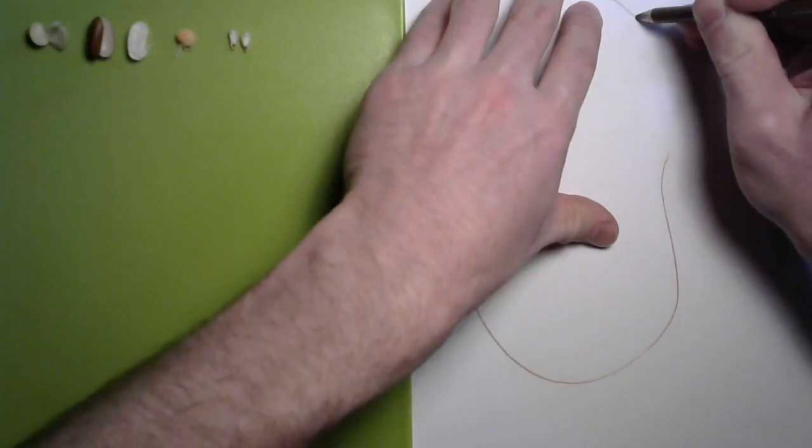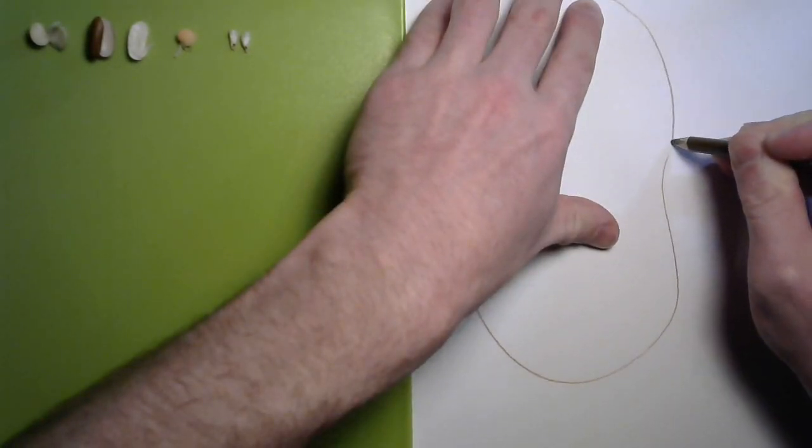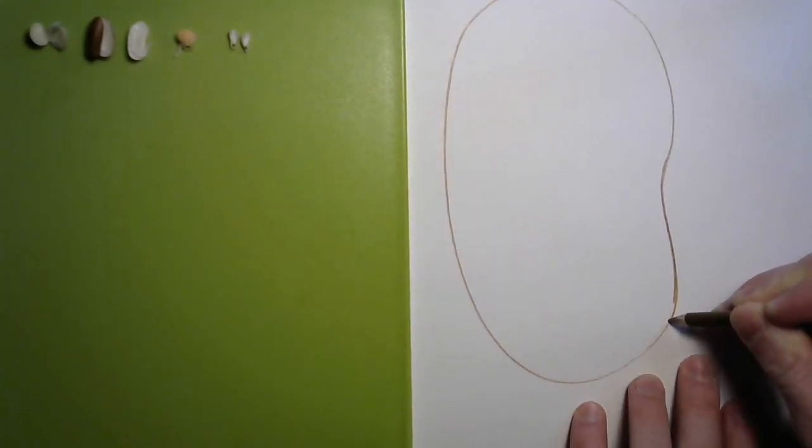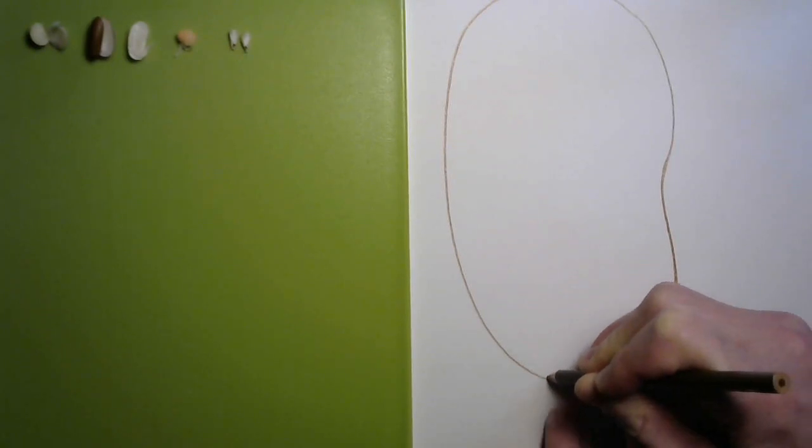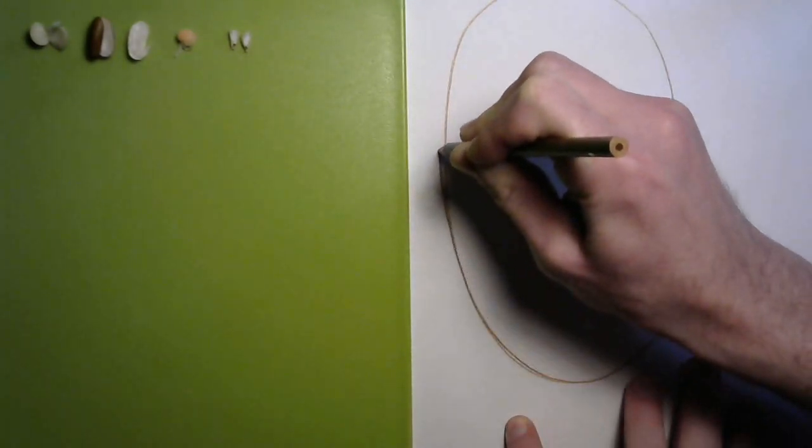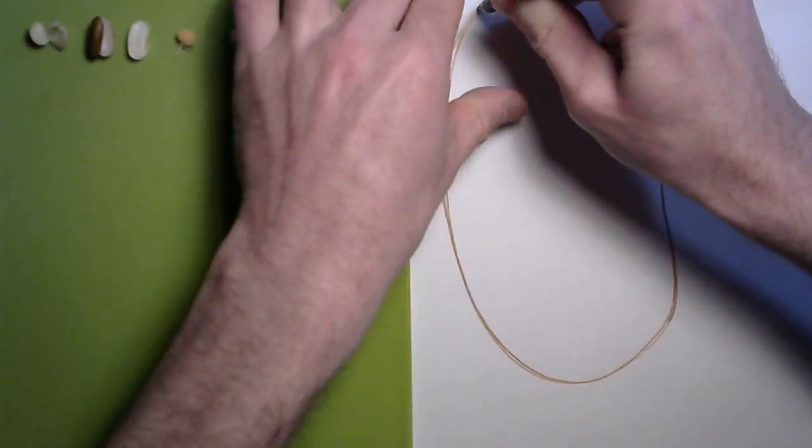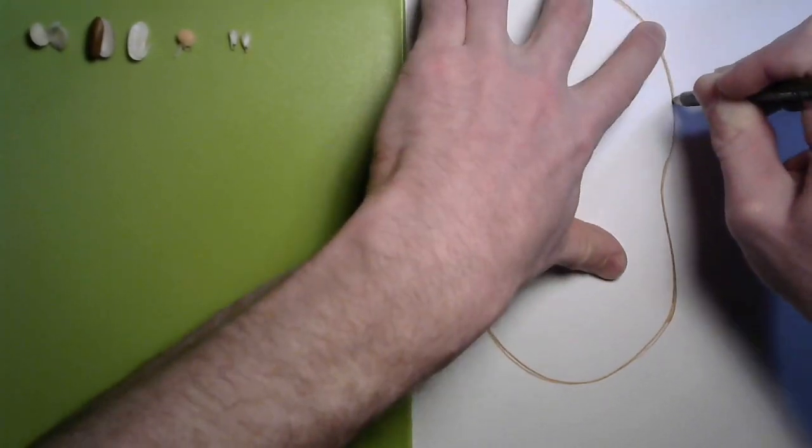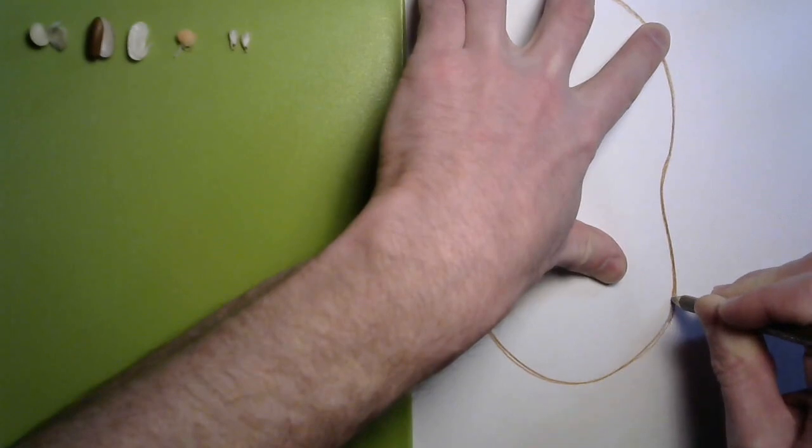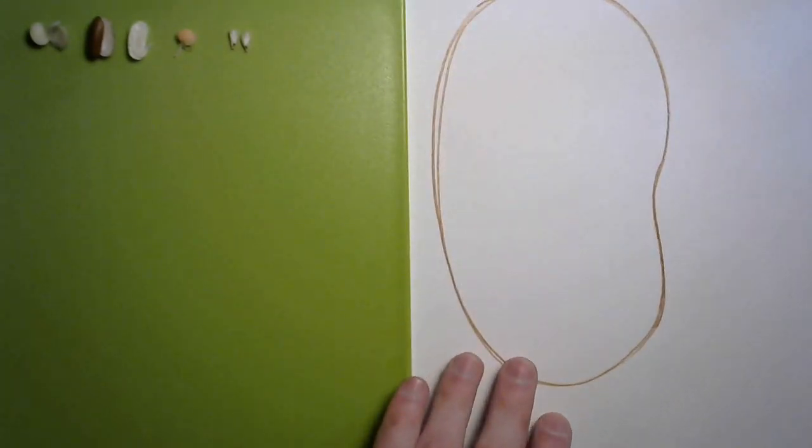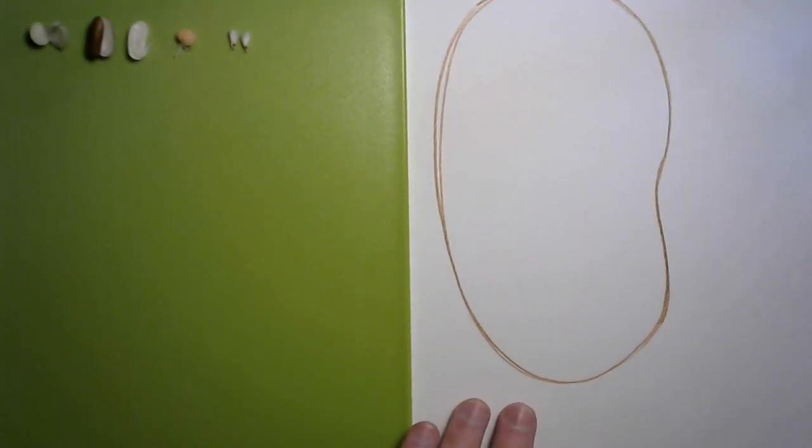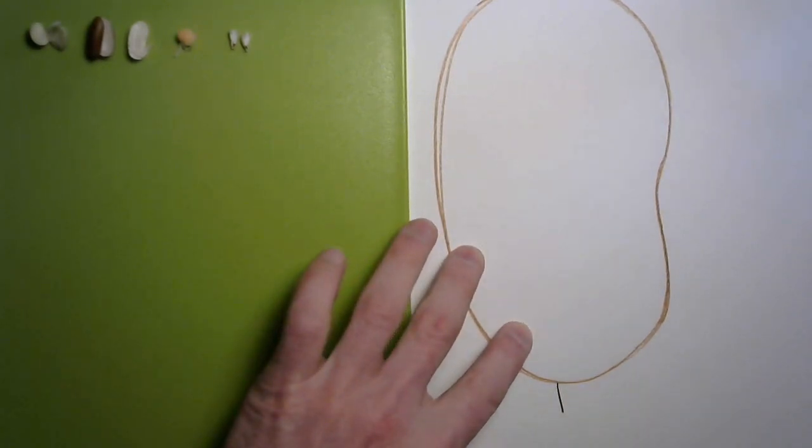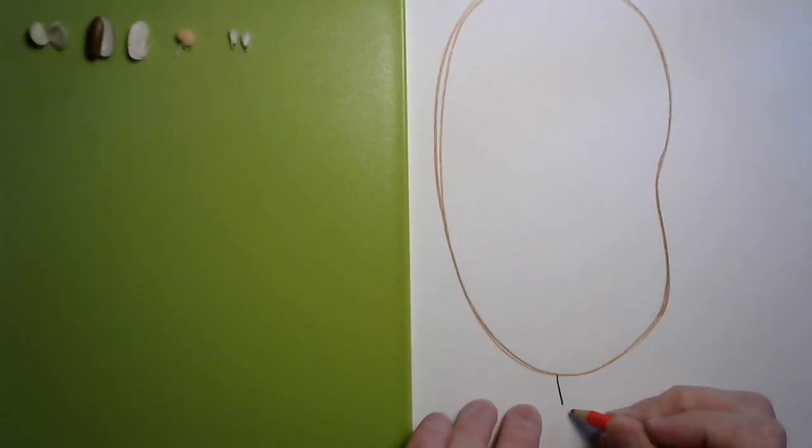If you remember from the last video when we dissected the seed, I told you the name of the outer shell or skin of a seed. Do you remember it? It's called the testa and its job is to protect the seed. Let's go ahead and label it. The testa.